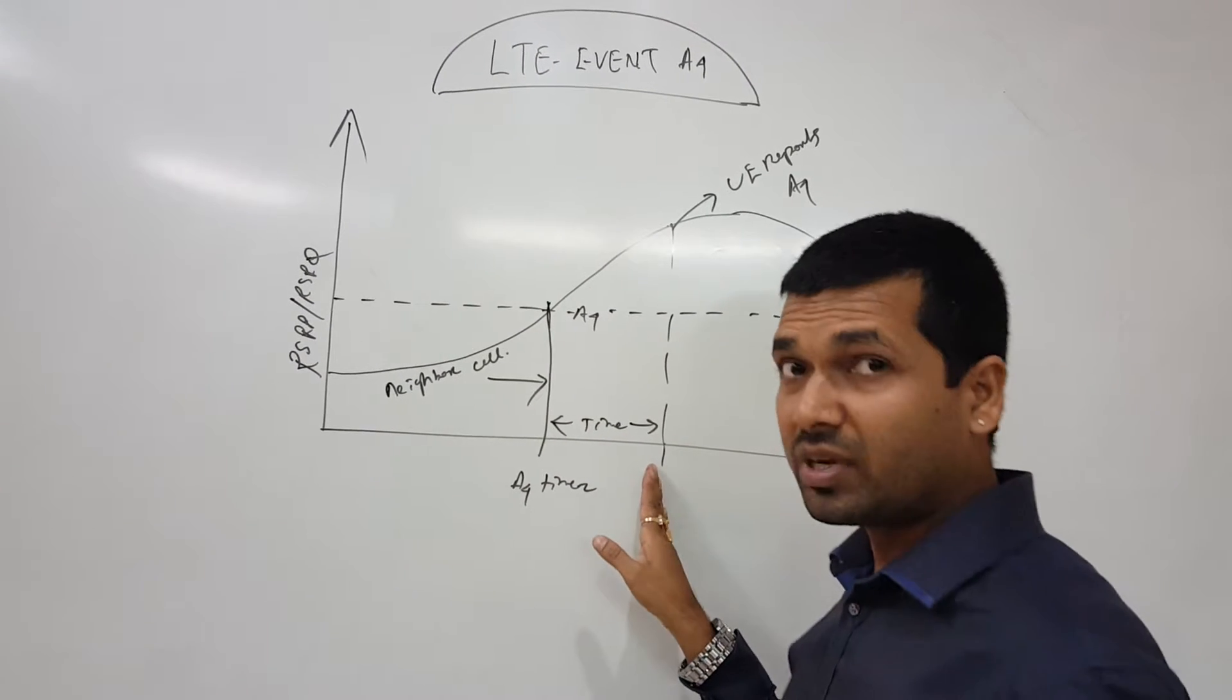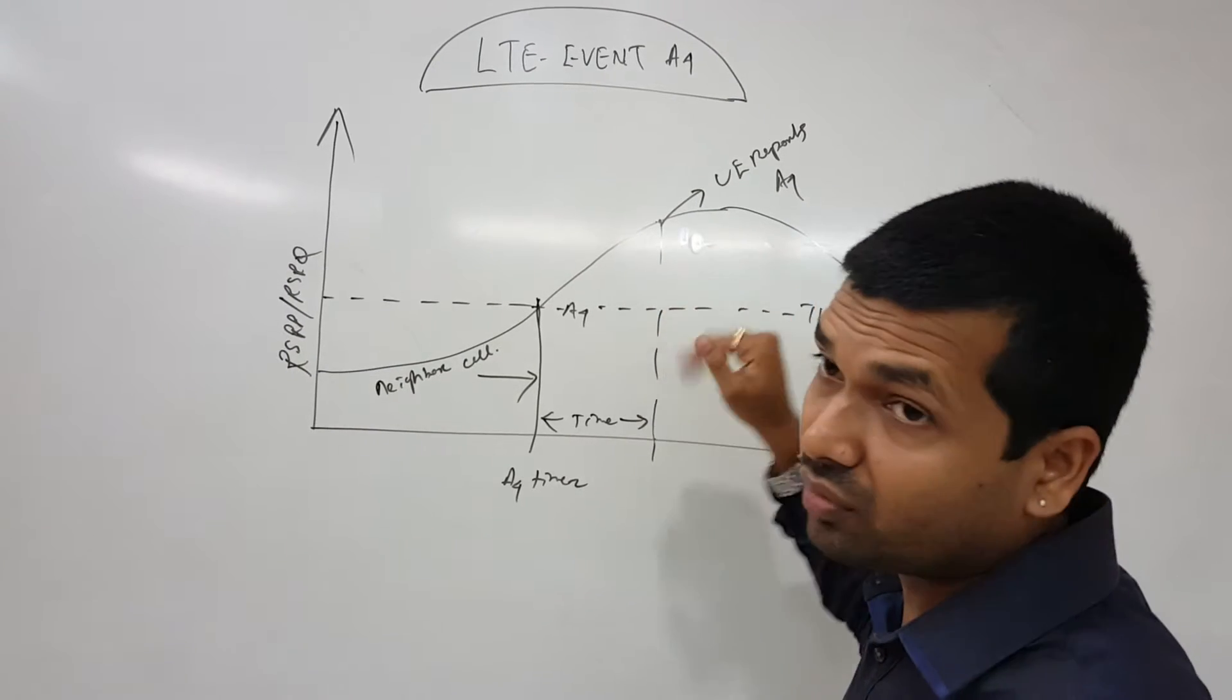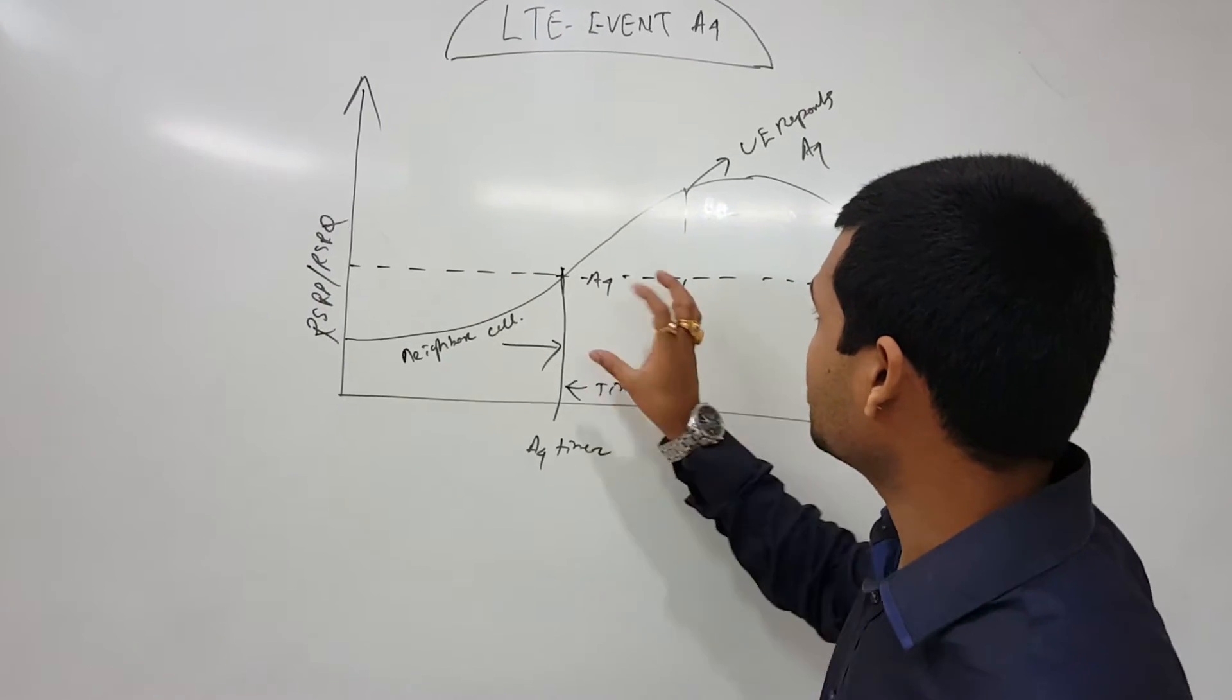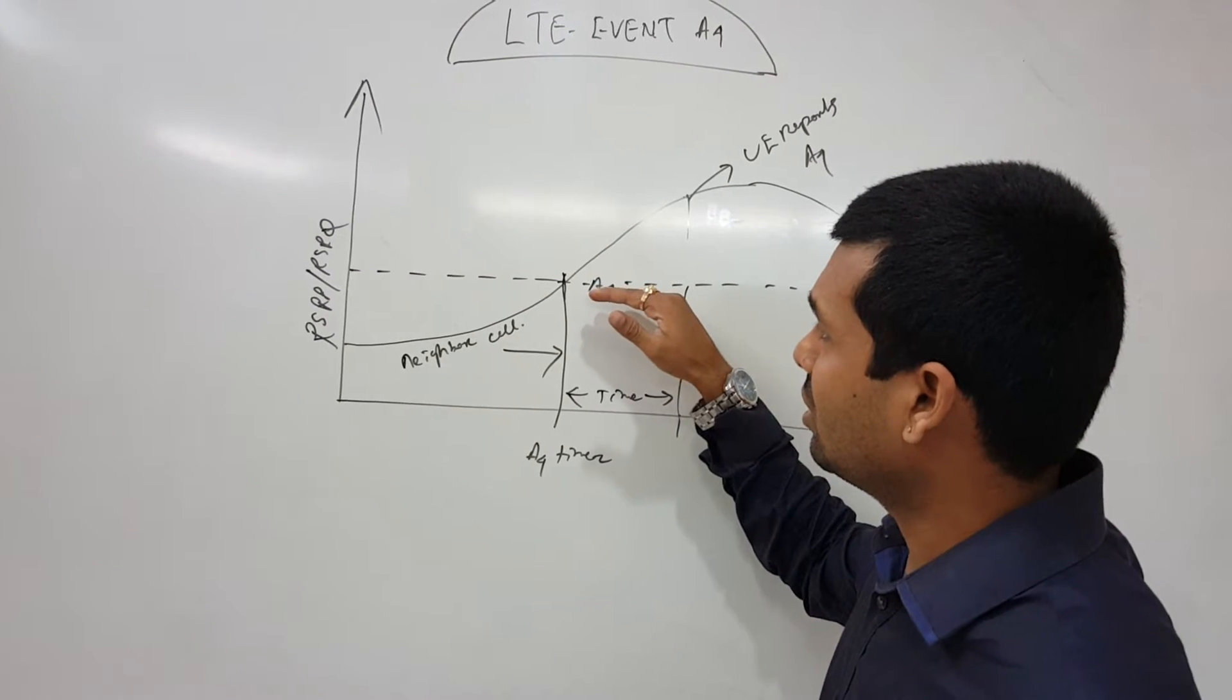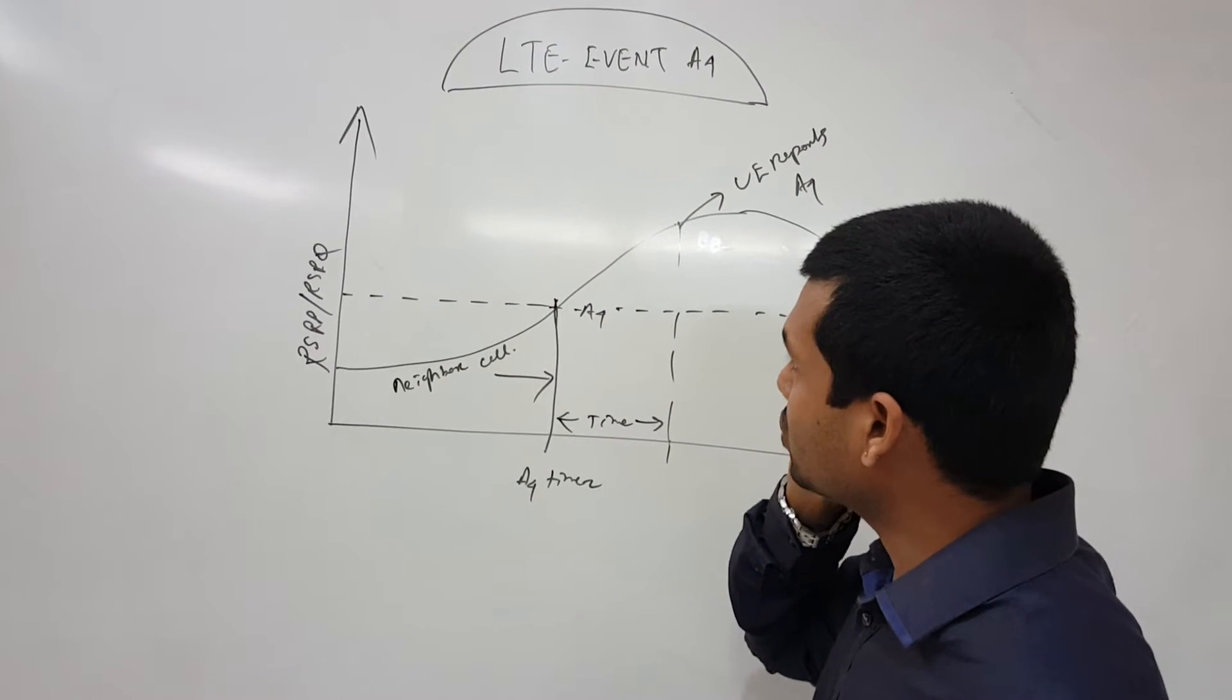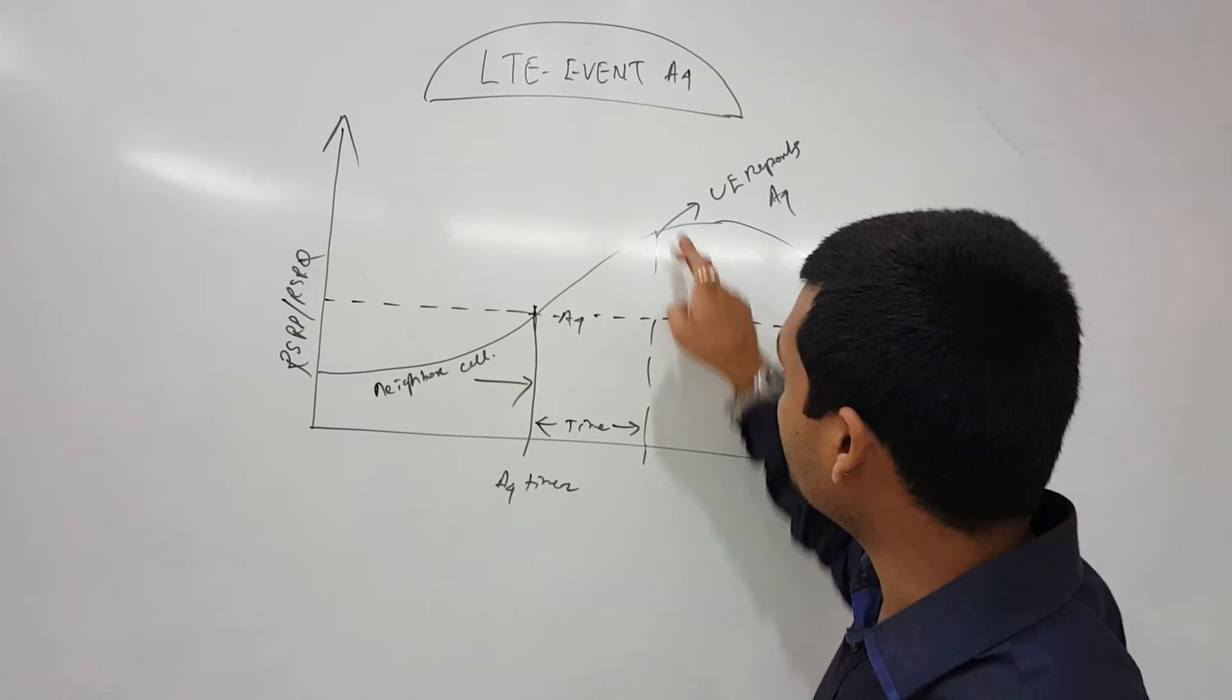Till A4 timer expires, you report the A4 event that the neighbor is becoming threshold better than a particular threshold we have given in the system. When the neighbor is reporting better than this value, the A4 timer starts here. It continues for this amount of time, and here at this point, the UE reports the A4 event.